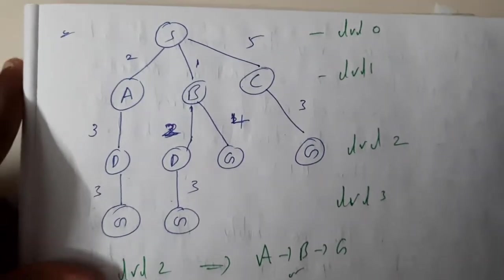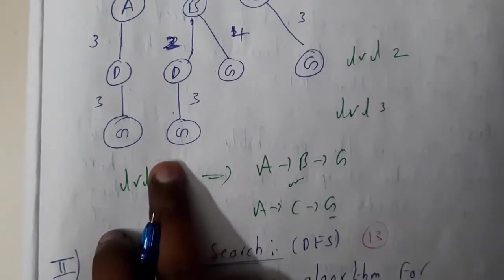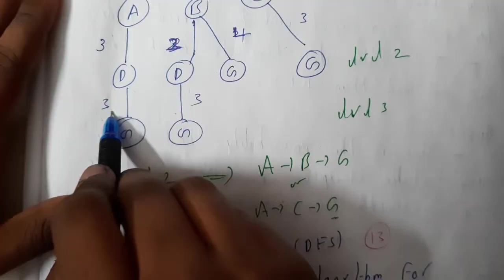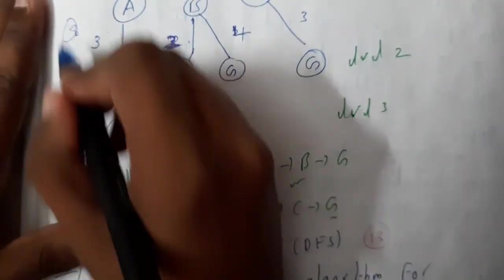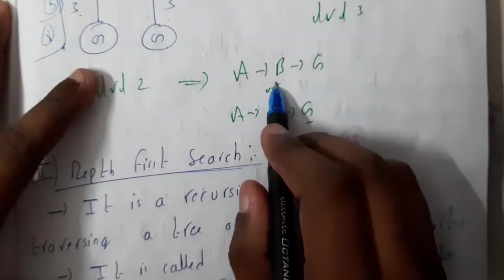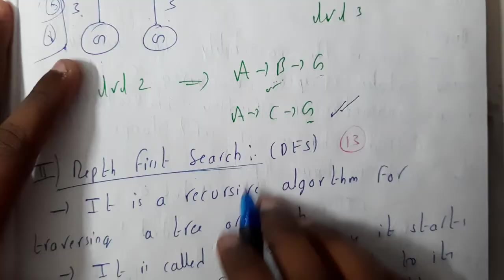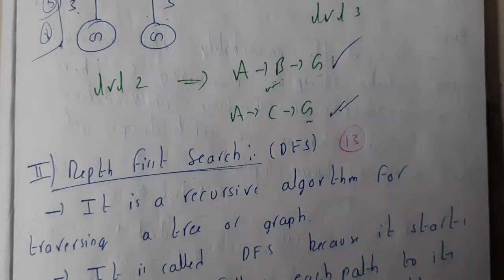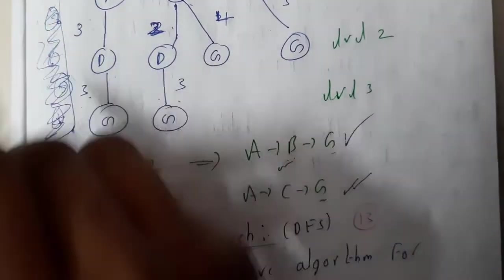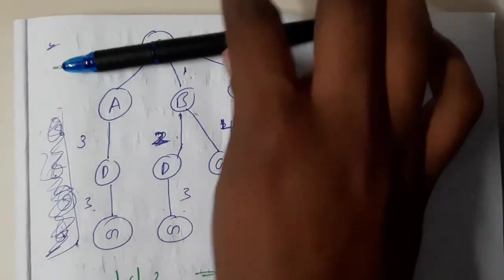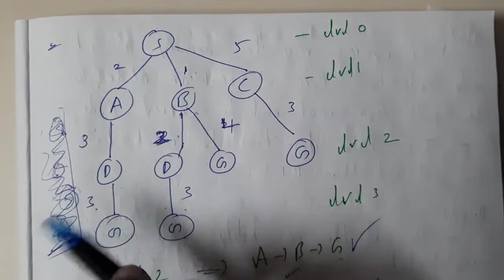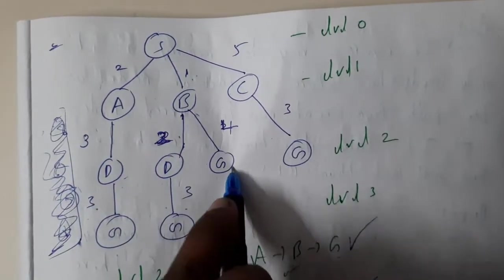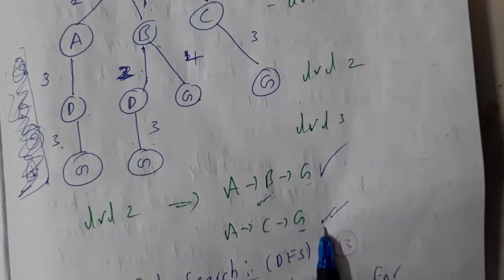Once the tree is built, assign level numbers: level 0, level 1, level 2, level 3. Our goal node is G. BFS checks level by level - in the first level is there any G? No. It scans S. Next level: A, B, C - no G. Third level: D, D, G, G - it scans this level and when it reaches G, it stops there. The first G found is at the path S-A-B-G which gives the minimal solution. This is how BFS finds the goal using level-by-level traversal.